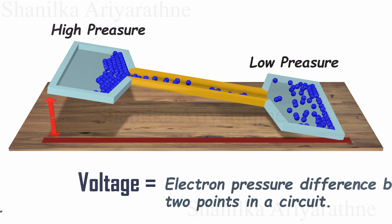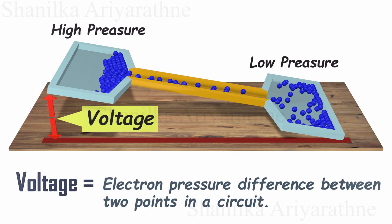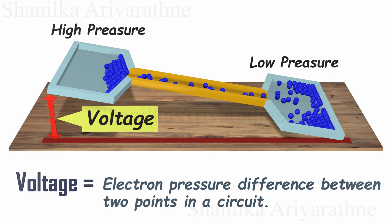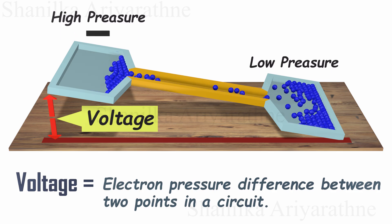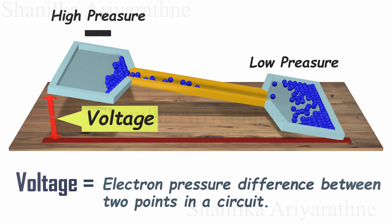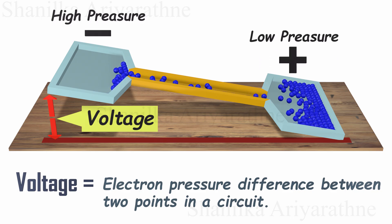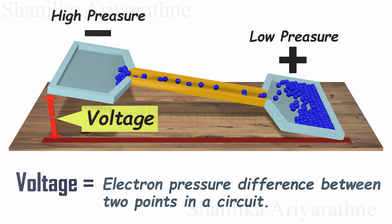This electron pressure difference is known as voltage. Since electrons are negatively charged, we label the high pressure side with a negative symbol and the low pressure side with a positive symbol. Therefore, electrons move from the negative side to the positive side.